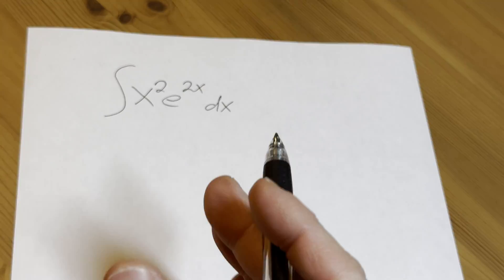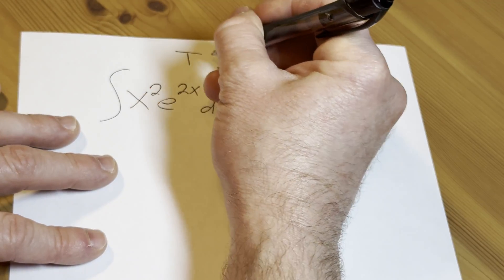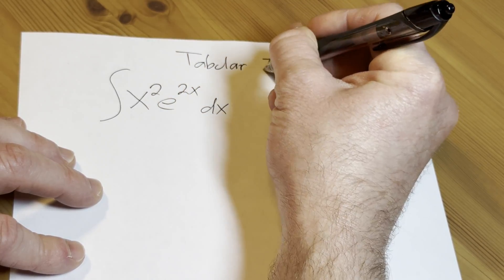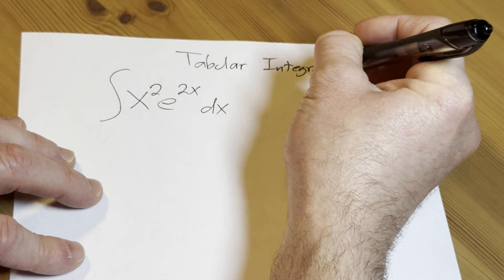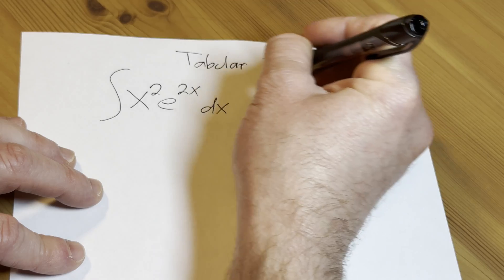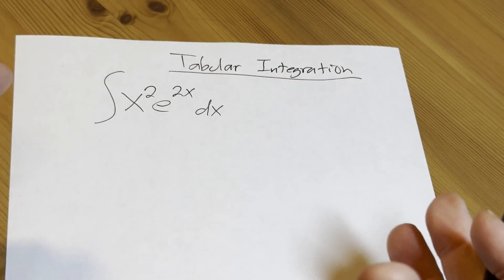So how do you use tabular integration and when can you use it? Again, the word I'm saying is tabular integration, and this is just an abbreviated version of the integration by parts method.